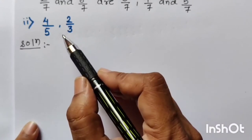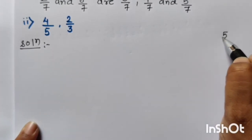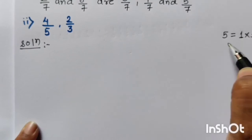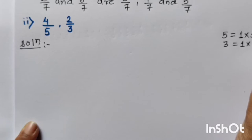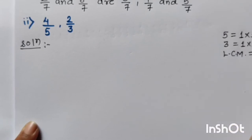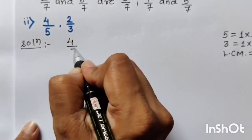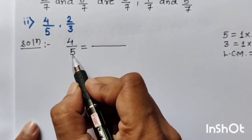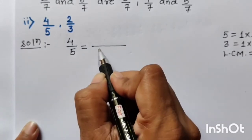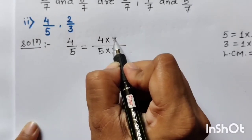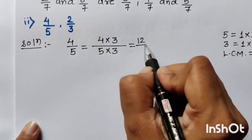For equalization of denominator, we will use the LCM method — we will find out the LCM of 5 and 3. As you all know, 5 is a prime number with factors 1 and 5. 3 is also a prime number with factors 1 and 3. There is no common factor, so LCM is the product of these two numbers: 5 × 3 = 15. Now we have to make the denominator of both numbers equal to 15. For 4 upon 5: multiply 5 by 3 to get 15, so we also multiply numerator 4 by 3 — giving us 12 upon 15.